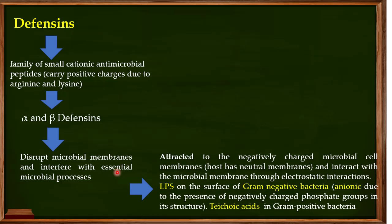When we talk about bacterial membranes — gram negative and gram positive — the gram negative bacteria have an outer layer known as lipopolysaccharide (LPS). This LPS contains phosphate groups, and because of these phosphate groups the LPS gives a negative charge to the membranes of gram negative bacteria. For gram positive bacteria, there are teichoic acids in the cell wall, and these teichoic acids also give a negative charge to those membranes.